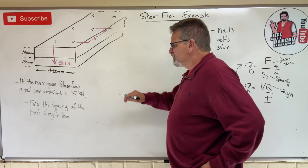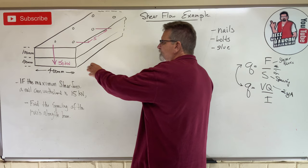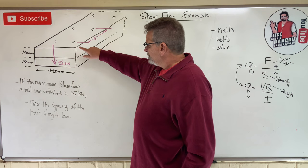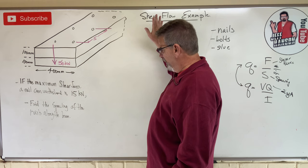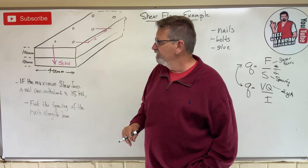Let's see how we use them. If the maximum shear force a nail can withstand is 15 kilonewtons, what is the spacing of the nails along this beam? So we've got two planks of wood that's 400 by 100, and they're nailed together ever so often. How long is it? I don't know, it could be forever long. But what is the spacing that I need between the nails?